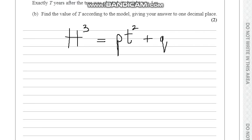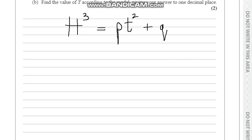Exactly 3 years after it was planted, height is 2 meters. So we plug 2 in for height. 2 cubed is 8 equals, 3 squared is 9, so that's 9p plus q. Okay, next one.